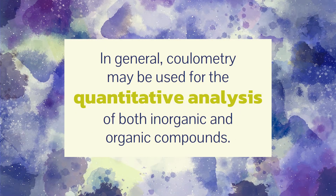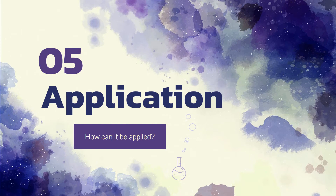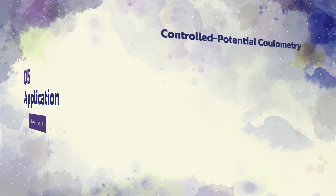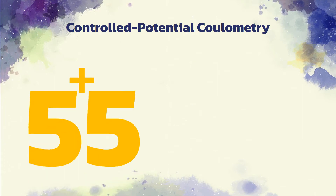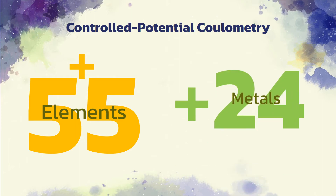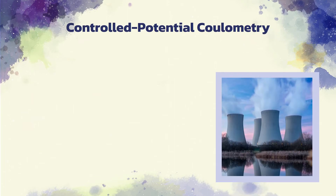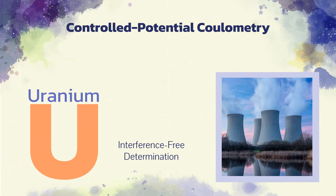In general, coulometry may be used for the quantitative analysis of both inorganic and organic compounds. We will discuss some of the applications of coulometric methods. Controlled potential coulometric methods have been used to determine more than 55 elements in inorganic compounds. Methods have been described for the deposition of more than 2 dozen metals at a mercury cathode. The method has also been used in the nuclear energy field for the relatively interference-free determination of uranium and plutonium.